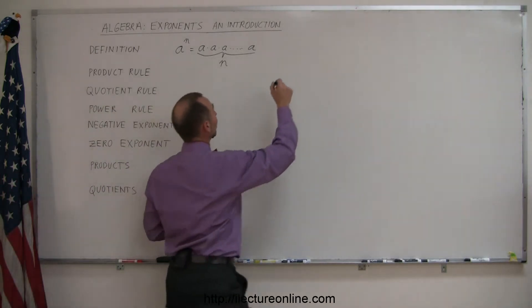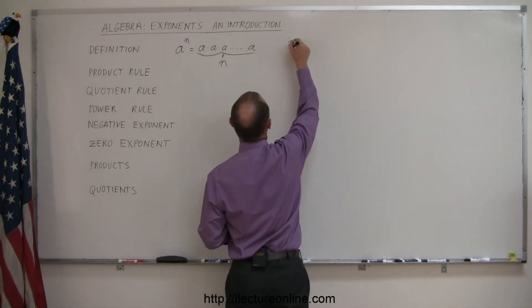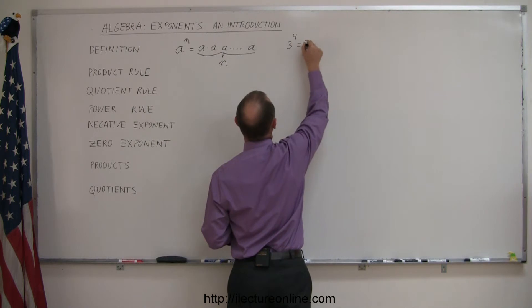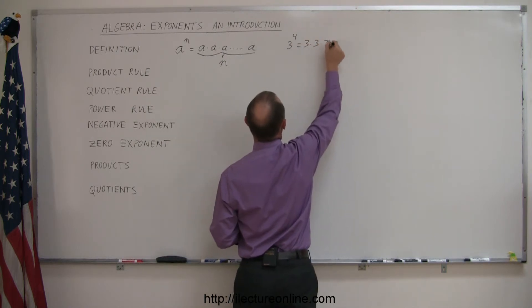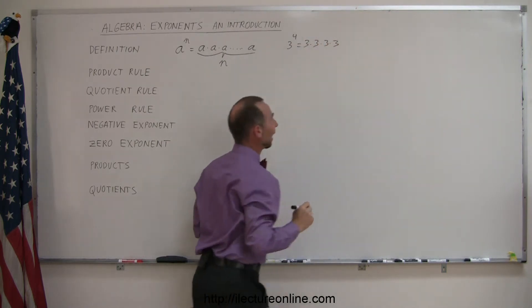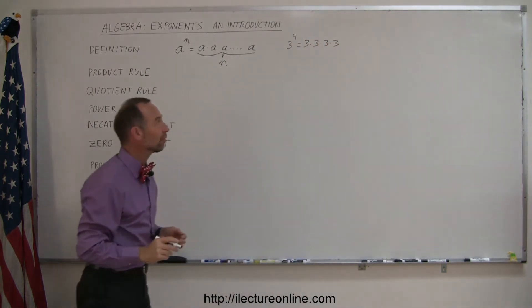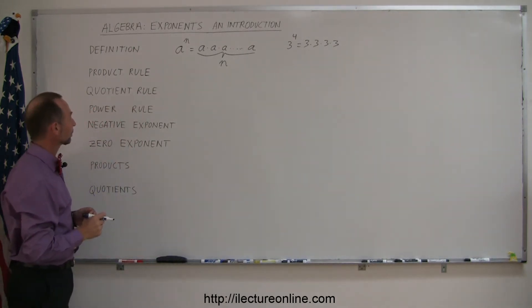As an example, let's say we have the number 3 to the 4th power. That's equal to 3 times 3 times 3 times 3, four times like that. So that's the definition of exponents.